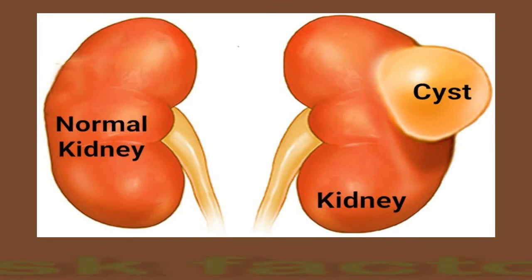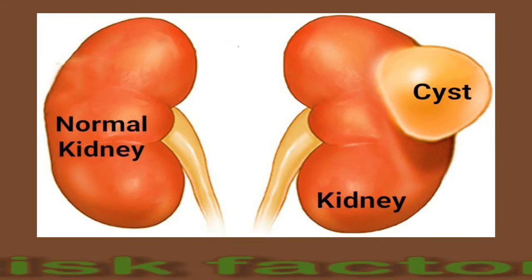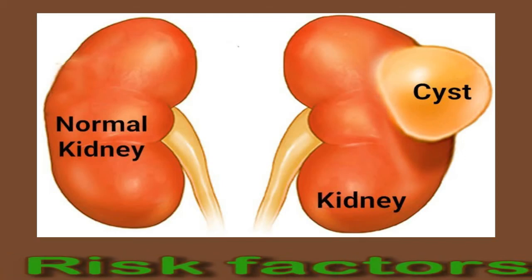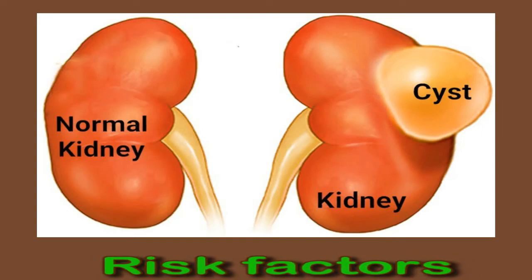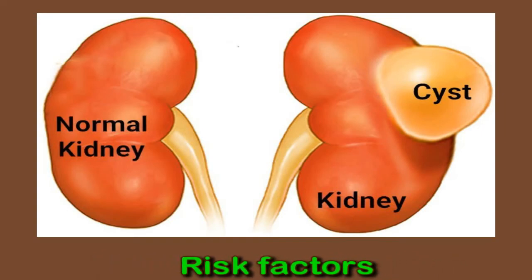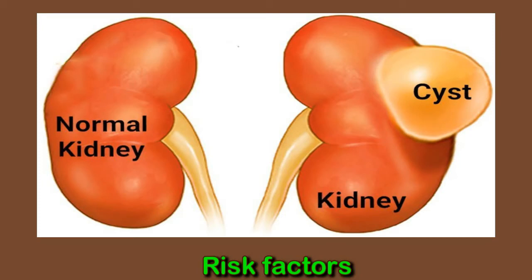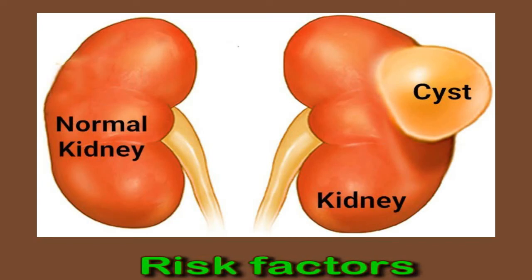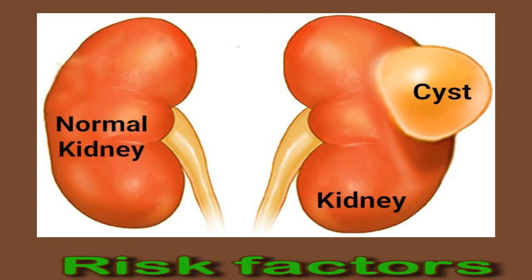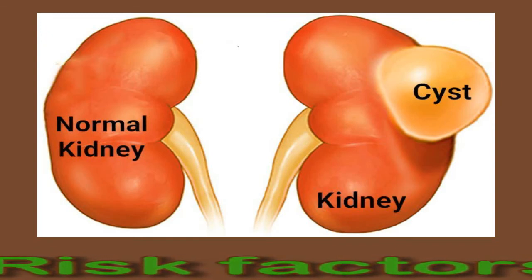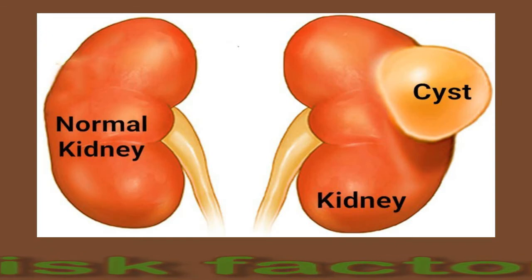Cysts caused by acquired cystic kidney disease may not require treatment, but the underlying cause will need to be addressed. Doctors are not sure why simple kidney cysts form. Other than aging, there are no real risk factors for developing simple kidney cysts. They are fairly common as people age — up to 25% of adults over age 40 and half of those over 50 develop simple kidney cysts. Additionally, men may be slightly more likely to develop them than women.